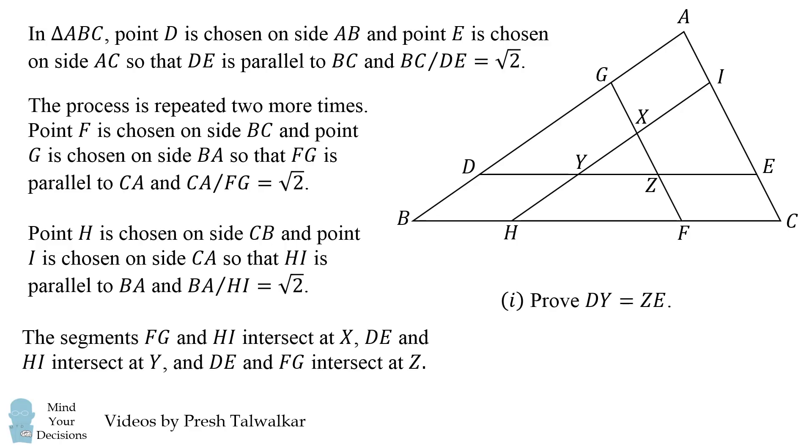There are two parts of this question. First, prove that DY is equal to ZE. And second, find the exact value of the ratio YZ divided by BC. Can you figure it out? Give this problem a try and when you're ready, keep watching the video for a solution.